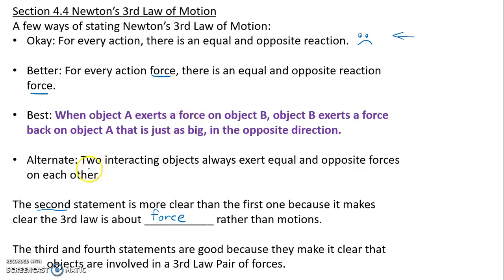Another way that is pretty good: two interacting objects always exert equal and opposite forces on each other. These third and fourth statements make it clear that we're talking about two forces—I'm sorry, that we're talking about two objects. Because one of the things that people get wrong, and I'm just going to put my two there because my screen won't let me write it over here.